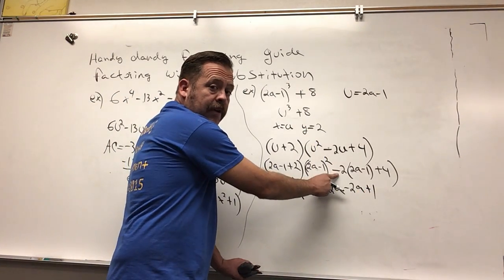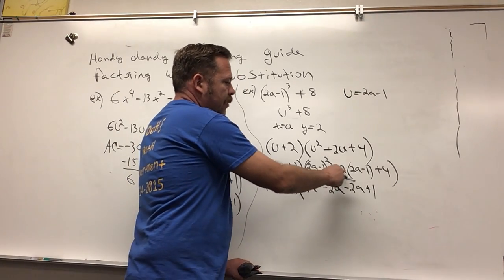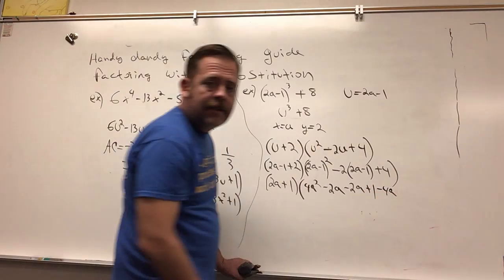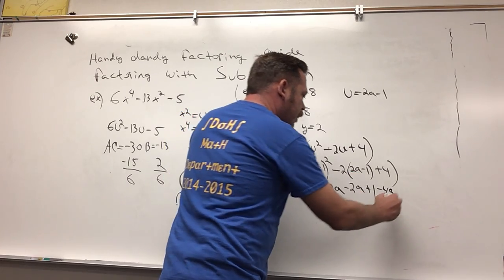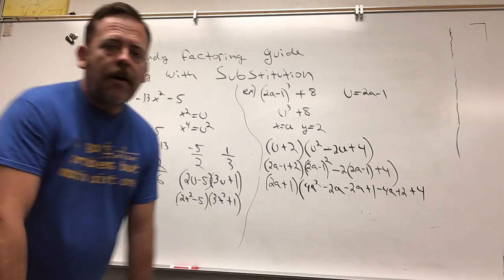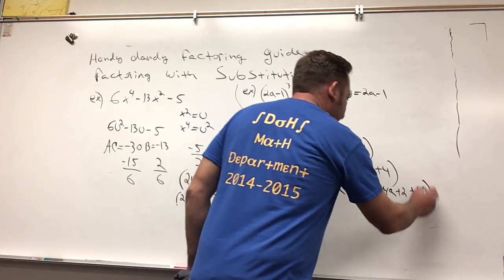Now I still need to distribute the negative 2 here. Negative 2 times 2a is minus 4a, and negative 2 times negative 1 is plus 2, plus 4. I barely fit in the window!